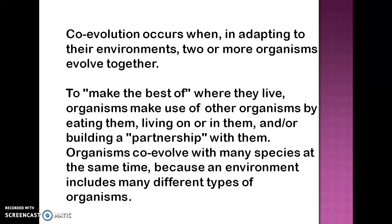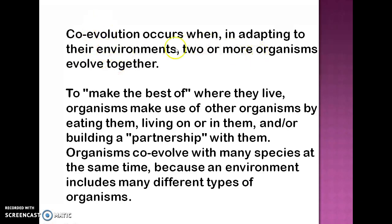Coevolution occurs when, in adapting to their environment, two or more organisms evolve together. To make the best of where they live, organisms make use of other organisms by eating them, living on them, or building a partnership. An organism co-evolves with many species at the same time because an environment includes many different types of organisms. They both utilize each other and adapt — not one alone, but together simultaneously.